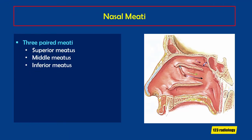There is a superior, middle, and inferior meatus. We can appreciate this on the sagittal diagram. If we dissect away the turbinates, you are left with the superior, middle, and inferior meati. The superior meatus receives drainage from the sphenoid sinus and posterior ethmoid air cells. The middle meatus receives drainage from the frontal sinus, maxillary sinus, and the anterior ethmoid air cells.